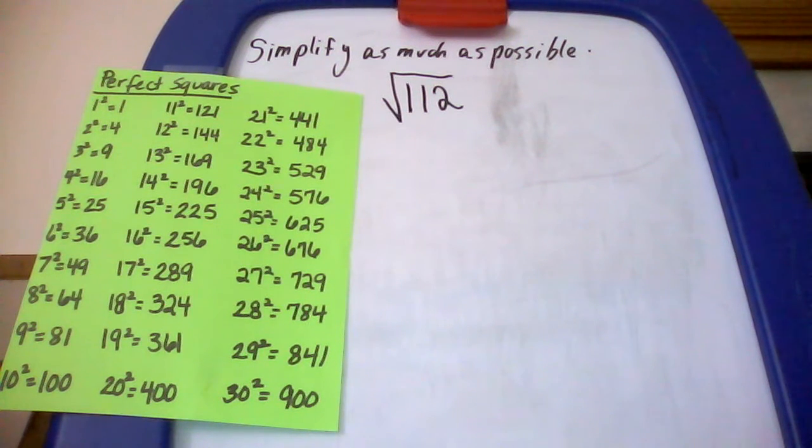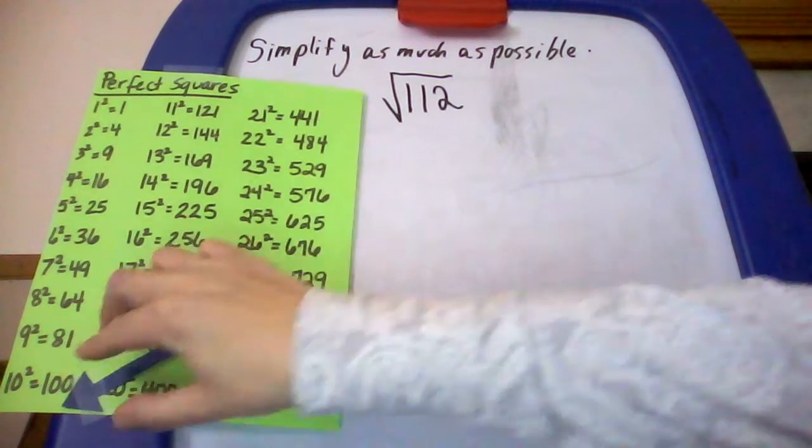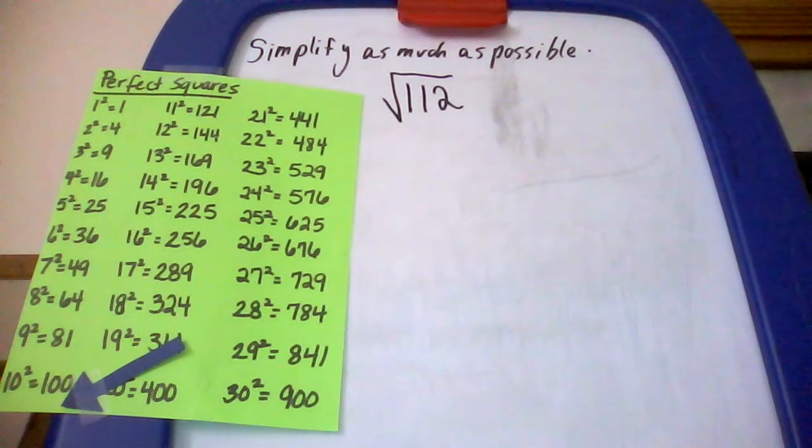It ends up being right between 100 and 121, so I'm going to put my little arrow down here at 100. I'm going to see which of those numbers, 81, 64, 49, 36, 25, 16, 9, and 4, which is the biggest that could be divided into 112.